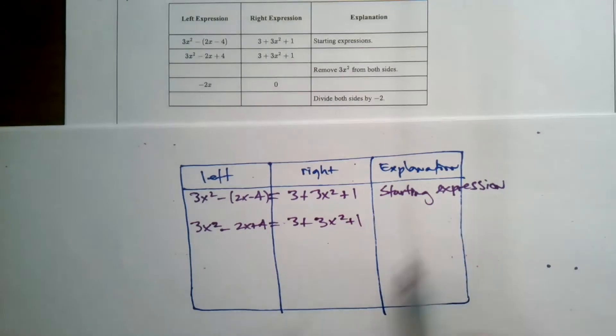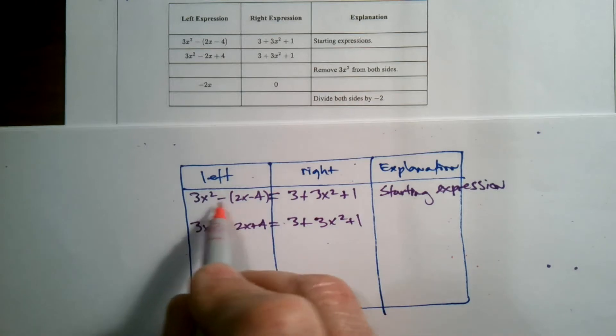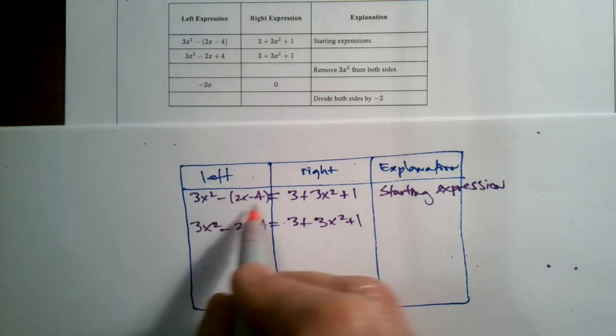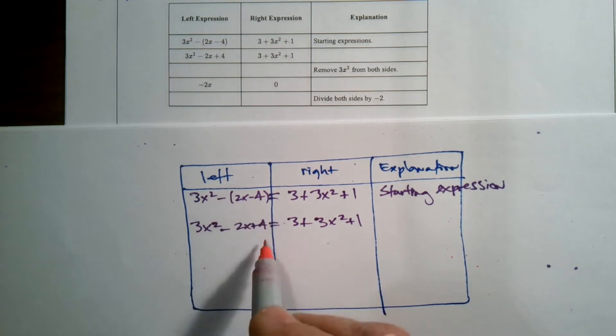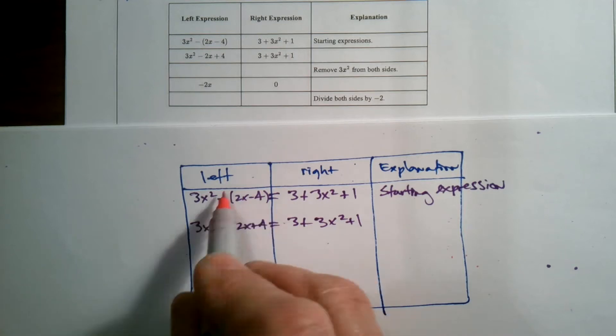What occurred right there? Well, if you look at what happened and I'll show you, we had this minus in front of the quantity (2x - 4). Now that quantity, that parentheses is gone. So what occurred?